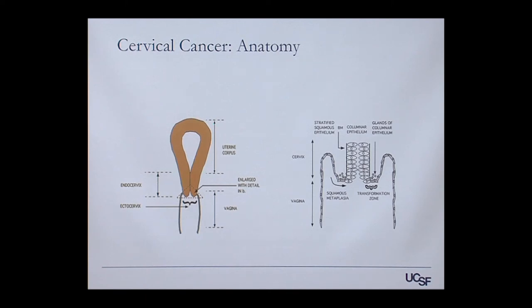I run the UCSF Dysplasia Clinic, where I evaluate women with abnormal pap smears. I wanted to review the anatomy we'll be discussing. This is a cartoon picture of the uterus — where the fetus would implant and grow. The tip of the uterus projects down into the vagina, represented by these gray lines.